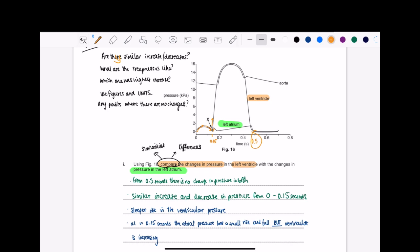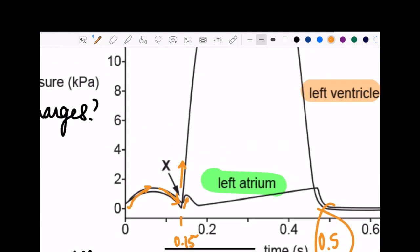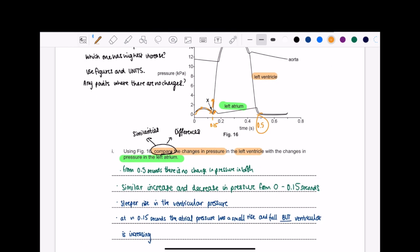In terms of the differences, we can say many things. Look at the steepness. It tells you what you need to write. It's no rocket science to think that the left ventricle's graph is more steeper than left atrium. Look at this, this is more steep than this. So that's why that is a mark in itself, steeper rise in ventricular pressure.